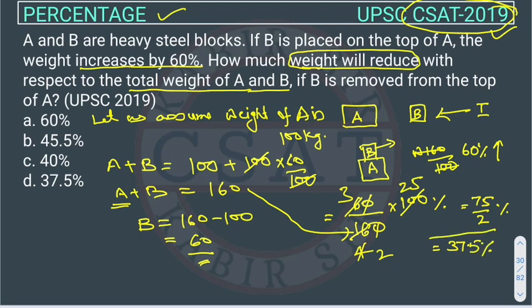So 37.5 percent weight will get reduced if we remove B from the top of A. The answer is option D. I hope this is clear. If it hasn't, you can comment and we can get connected and I will explain again.